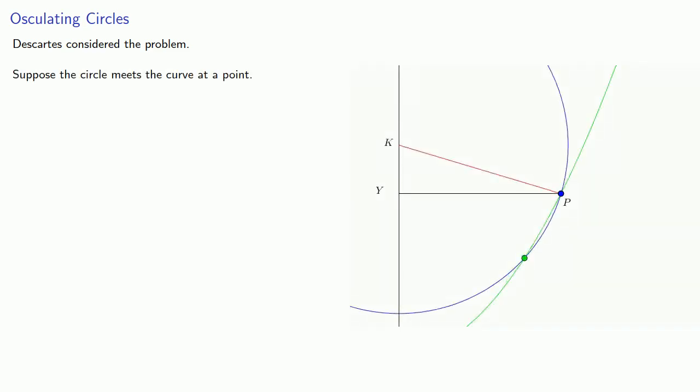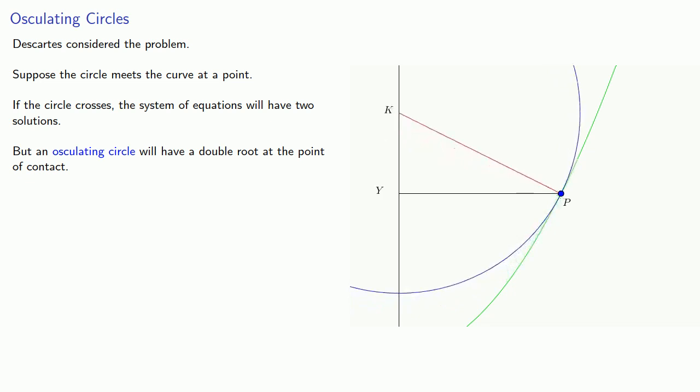So Descartes considers this problem. Suppose the circle meets the curve at a point. Now if the circle actually crosses the curve, the system of equations that correspond to the circle and the curve will actually have two solutions, corresponding to each of the intersection points. But what's called an osculating circle will have a double root at the point of contact. Descartes described this as the two solutions becoming one. And we might go so far as to call this Descartes' Principle: the geometric property of tangency corresponds to the algebraic property of a repeated root.